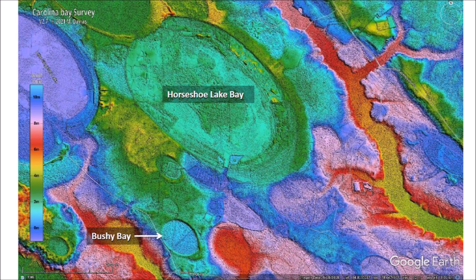From the LiDAR images of Bushy Bay and Horseshoe Lake Bay, it is evident that Bushy Bay has a rounder shape than Horseshoe Lake Bay. The increase in ellipticity as a function of length of the bays was described by Professors Melton and Shriver in a 1933 publication. The LiDAR image shows that Horseshoe Lake Bay overlays a smaller bay to the west, and its northwest rim is overlaid by another bay called Marshy Bay. These superpositions indicate the sequence in which the bays were emplaced.